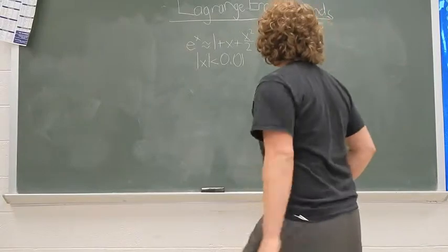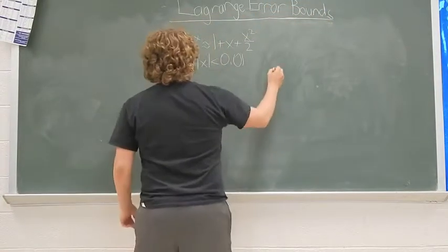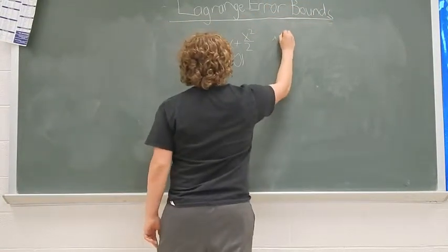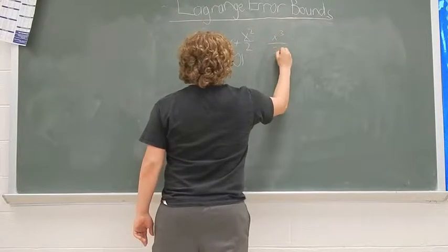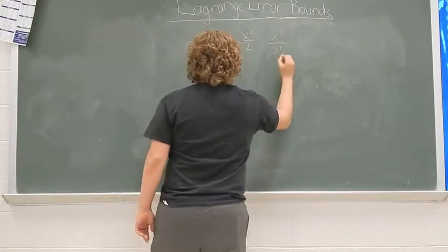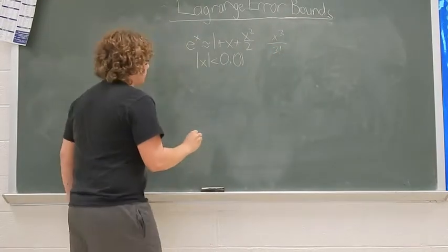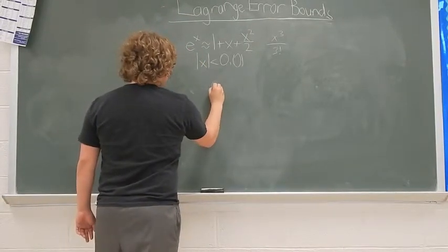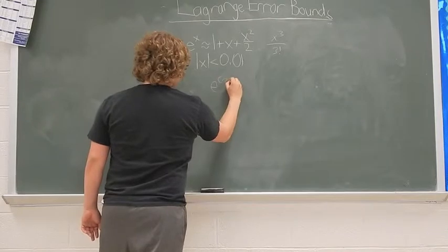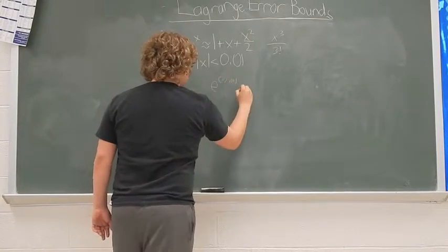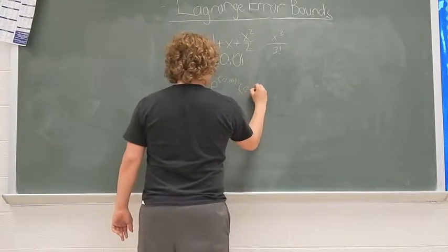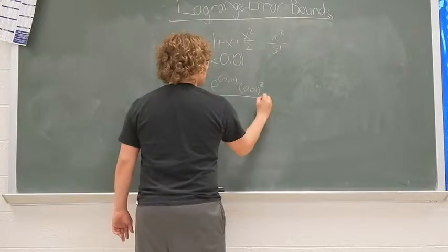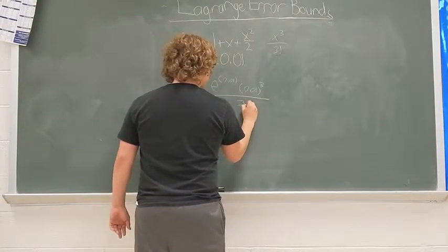Alright. So, you're going to take the next term. It's going to be x cubed over 3 factorial. And then you're going to maximize the dx. So, it's going to be e to the 0.01 times 0.01 cubed, because that's going to be maximizing f over 3 factorial.